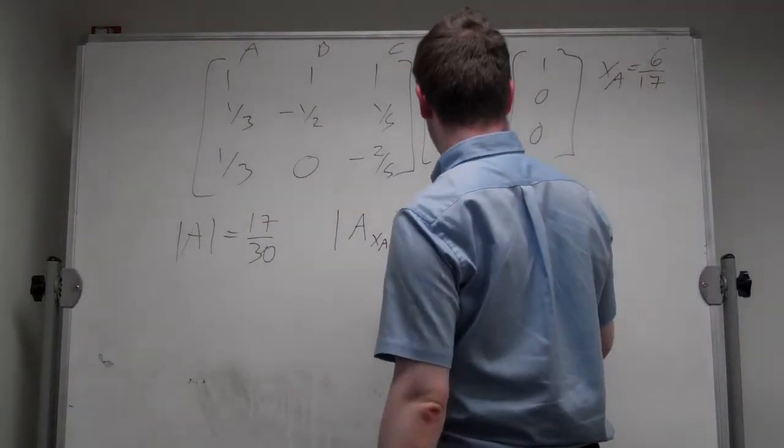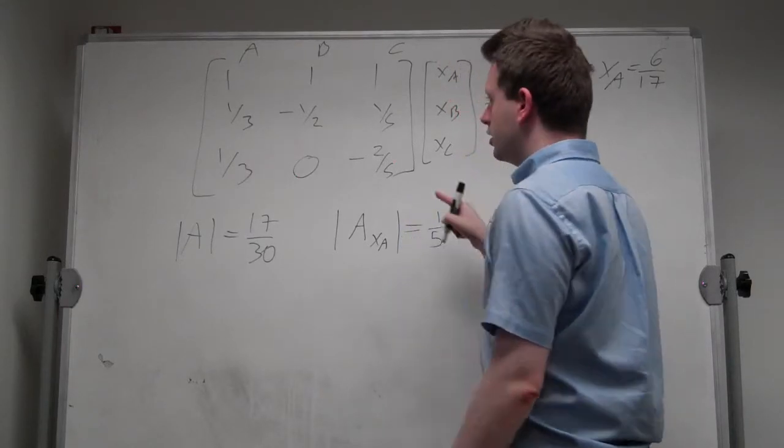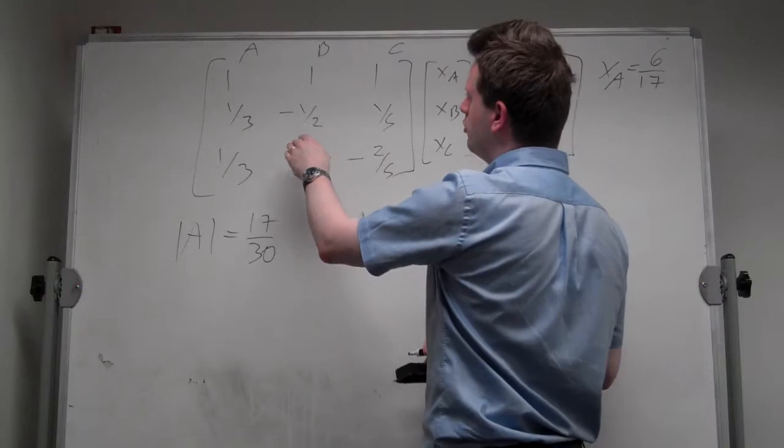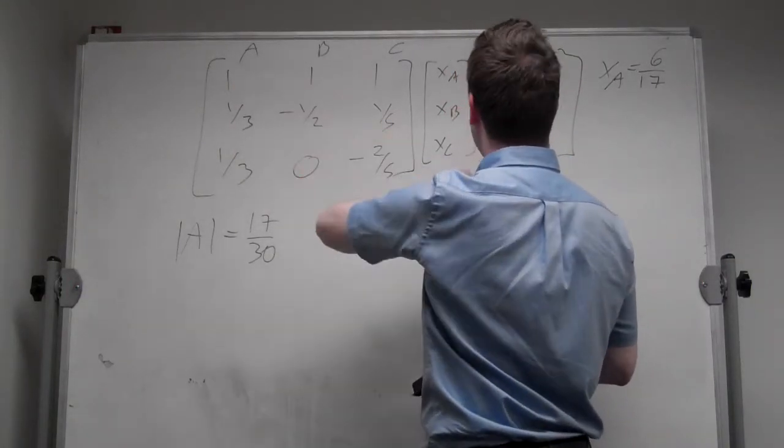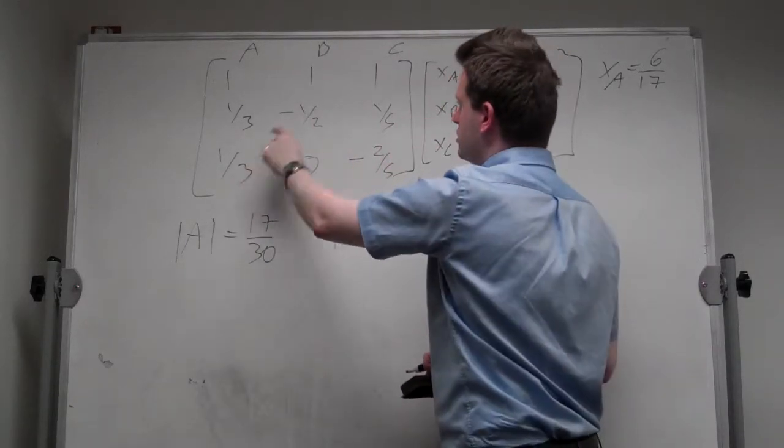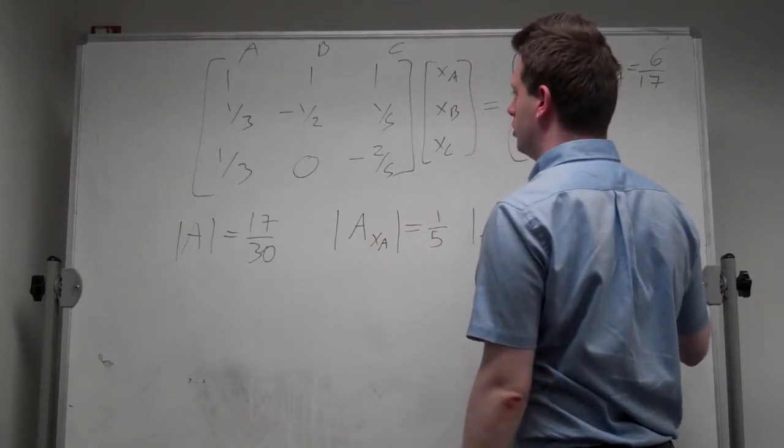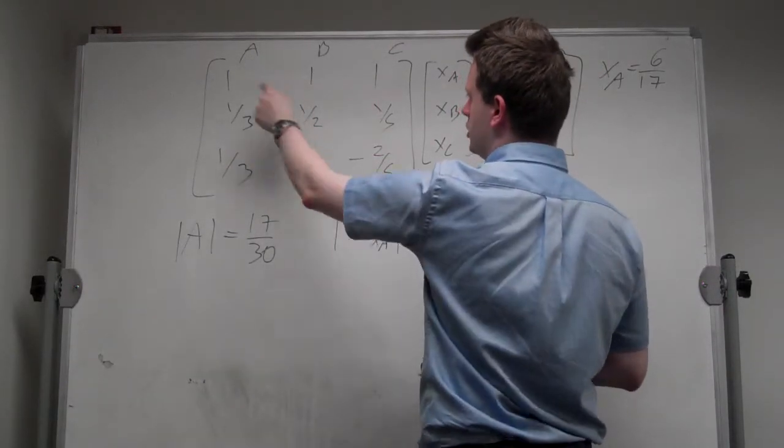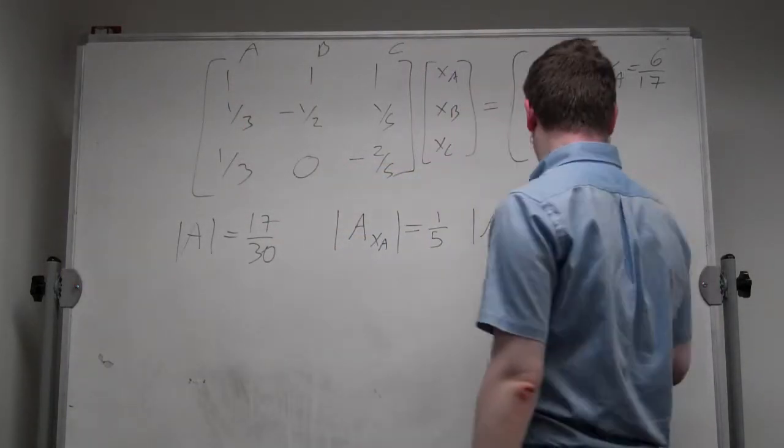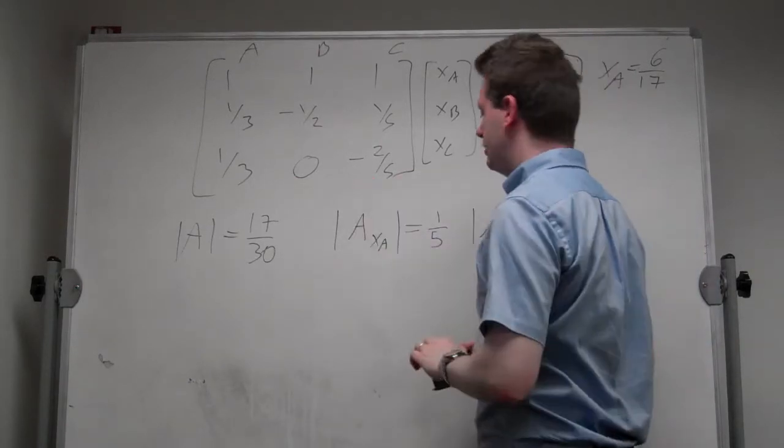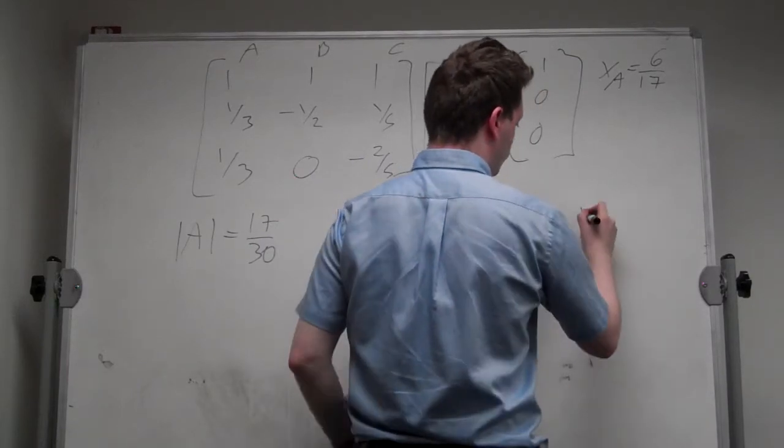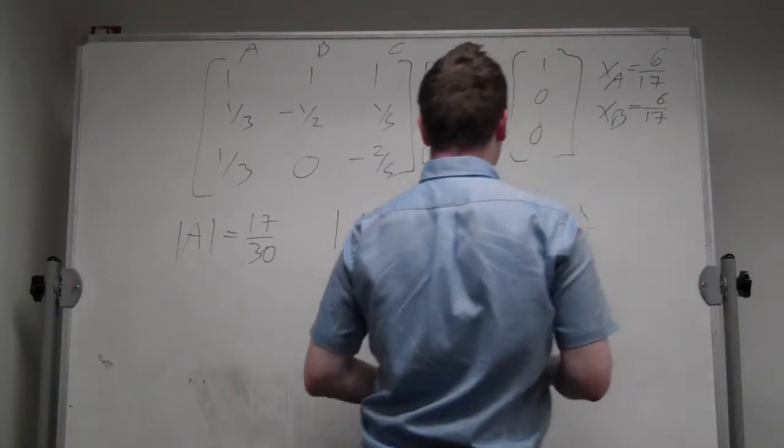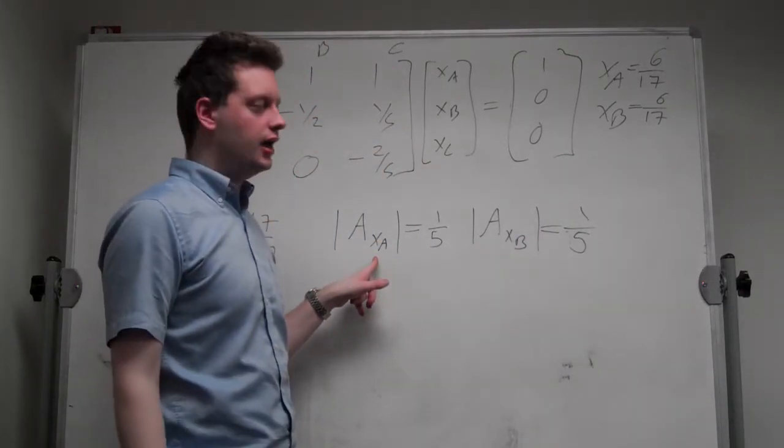Now let's look at XB. The determinant of A where we replace the XB column, which is the middle one, by this vector. Let's do the same exercise. We know that from all the falling diagonals, the main one is 0, this one is 0, so we're left with this diagonal, which is 1/15. And now we need to look at the raising diagonals. This one is 0, this one is 0, so we're left with this one, which is 2/15, plus 2/15, since there's a negative sign. That's simply 1/5. If you look closely, we get XB = 6/17, because the determinant of XB is the same as the determinant of XA.